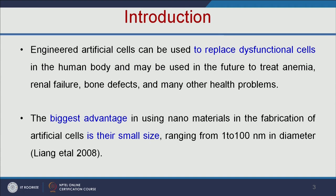In the previous lecture, we learned how to replace damaged tissue using a tissue engineering approach. In this lecture, we are going to learn how to make an artificial cell and how to replace damaged cells using the artificial cell approach. These engineered artificial cells can be used to replace dysfunctional cells and may be used in the future to treat anemia, renal failure, and many other health problems.